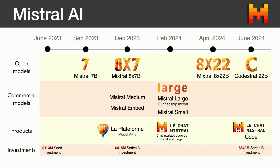Earlier this year in February, we released Mistral Large, which is our flagship model with best-in-class reasoning and math ability. Also in April, we released a new open model, 8x22B. And then very recently in June, we released a code-specific model called Codestral 22B. It's also available in the chat interface that we built along with Mistral Large, and it's free to use.